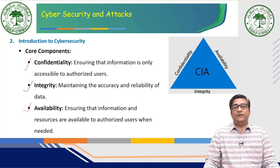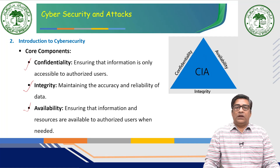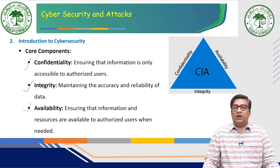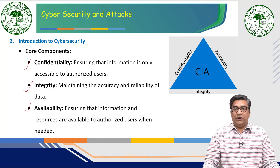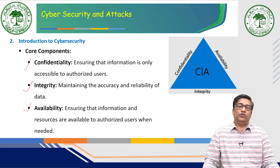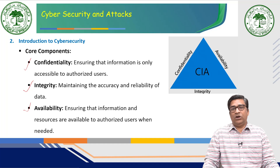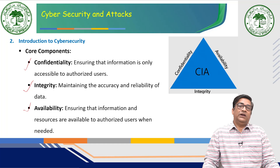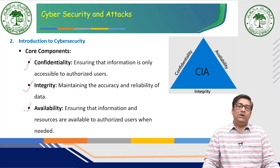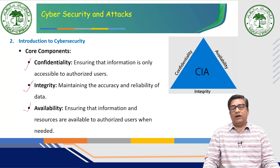To understand the CIA concept, consider a simple bank example. We all have our data stored on a bank server. Confidentiality means if a cyberattacker reaches the bank server and steals our data, it compromises confidentiality because your data is lost. Integrity means if the attacker goes to the data and corrupts it — the data is still there but corrupted. Availability means if the attacker makes the data server unavailable, then services cannot be used because of the cyberattack.